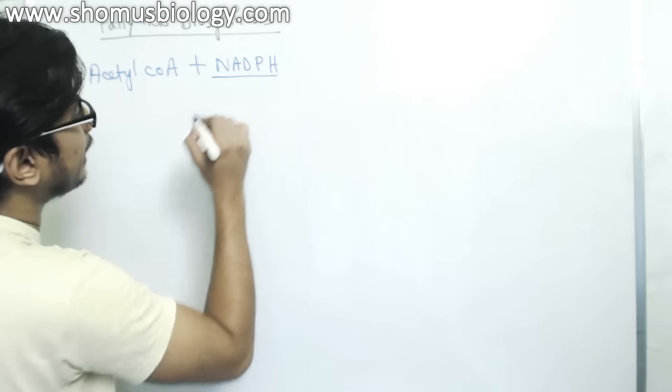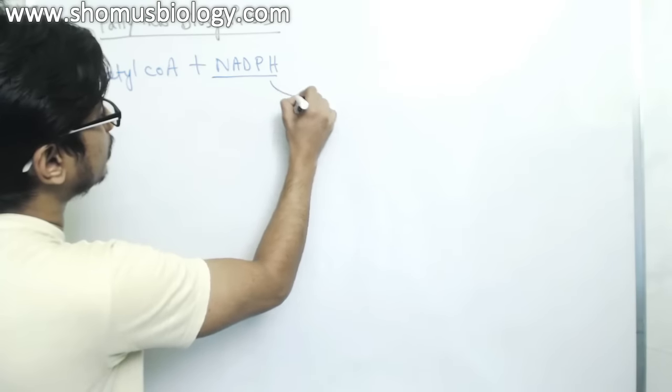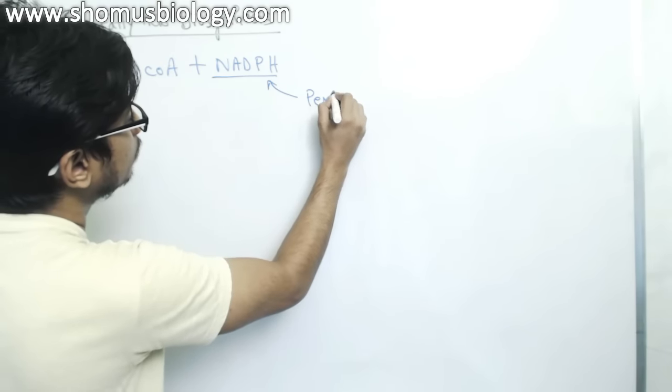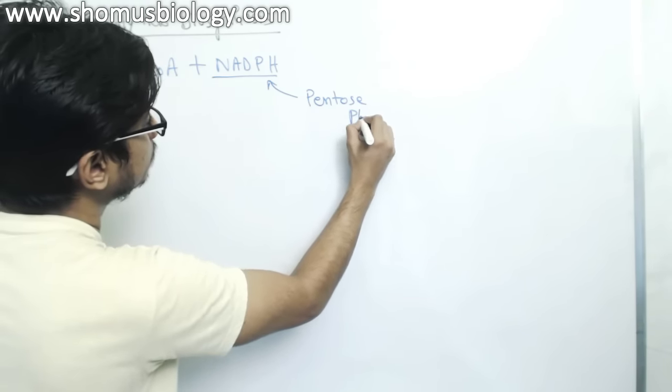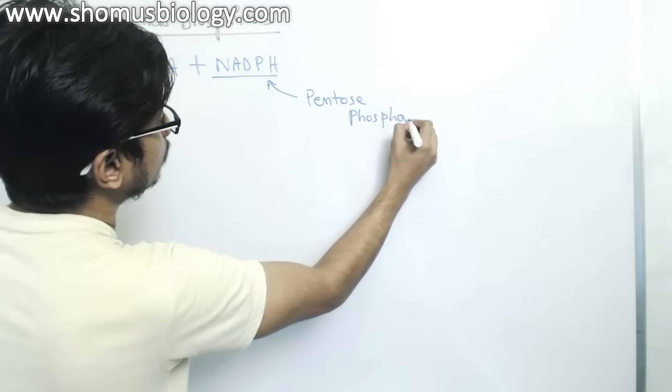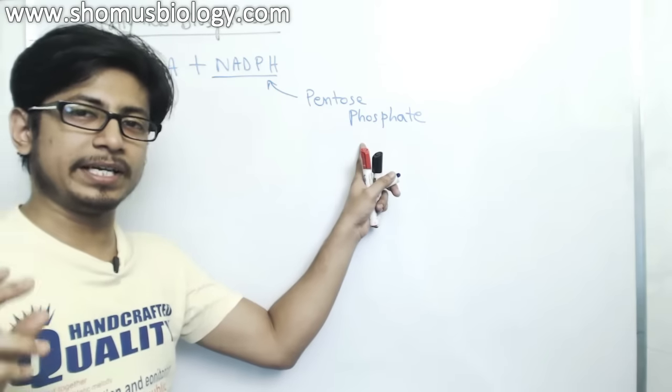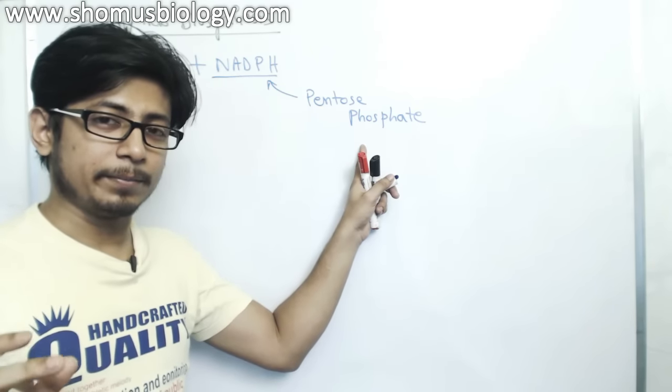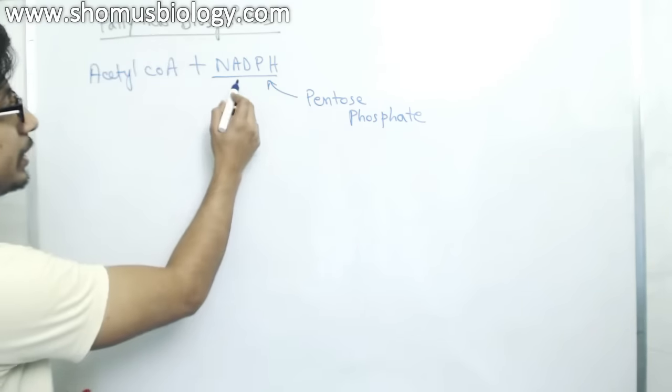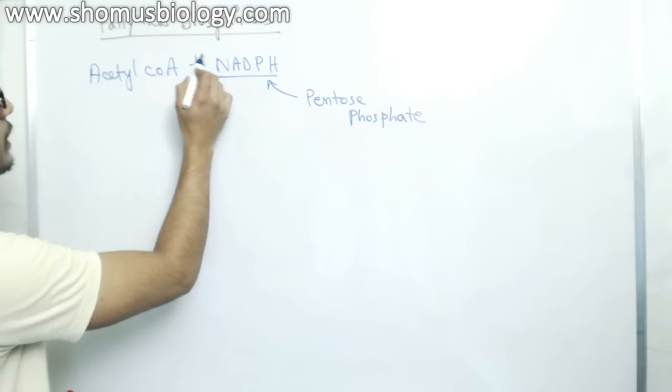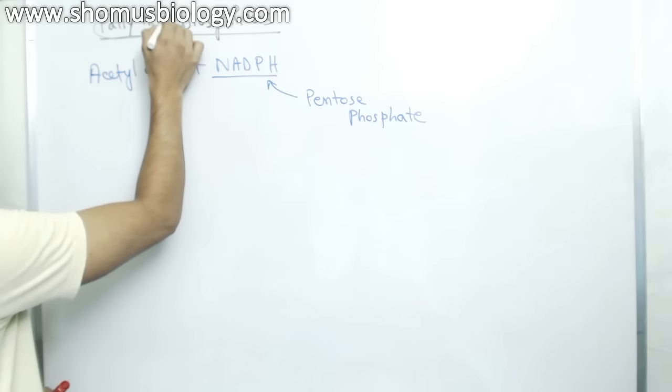These are the two molecules that we need to start the process of fatty acid biosynthesis. And I told you that this NADPH is a product of pentose phosphate pathway. So if we check your concept earlier, pentose phosphate pathway is really important pathway. Because without it we cannot produce NADPH. And without NADPH fatty acids cannot be produced.